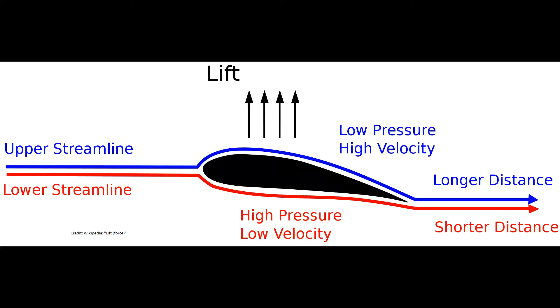As you can see from the simplified image, the same principle can be applied to a wing. The curved shape causes the air above the wing to move faster than the air on the bottom, creating a low-pressure zone on top, generating lift.